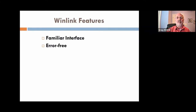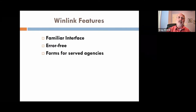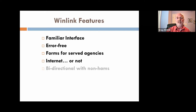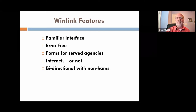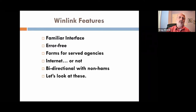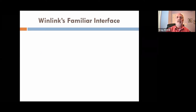WinLink has a familiar interface. It transmits all messages error-free. It has built-in forms for served agencies. It can use the Internet to one degree or another — or not. And it can facilitate bi-directional communication with non-amateurs. We're going to look at all of these features and give you a quick overview of each one.